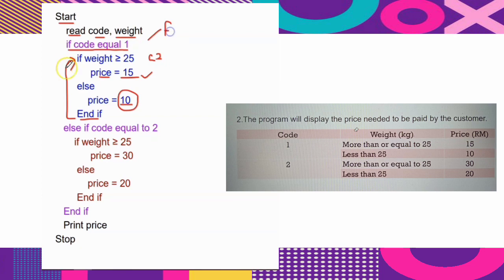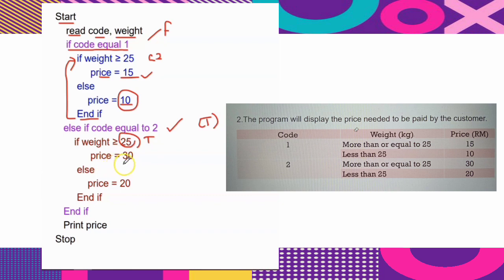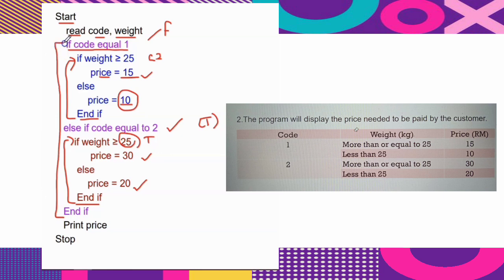If code is not equal to 1, the computer checks ELSE IF code equal to 2. If true, the computer checks the second (inner) condition: if weight is greater than or equal to 25, price equals 30 ringgit; else price equals 20 ringgit. Write END IF to terminate the inner IF block, then END IF to terminate the outer IF block. Then PRINT price, and finally STOP.